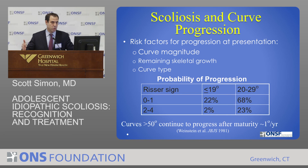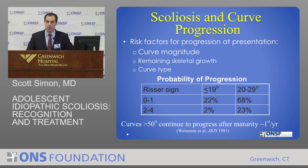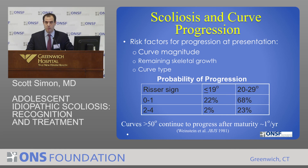On the pelvic x-ray, we look at the Risser sign — a growth plate that marches from lateral to medial across the pelvis, divided into quarters. The more medial the growth plate, the more skeletally mature the patient, until it's fully fused. The more skeletally immature the patient and the bigger the curve, the more likely it will progress. We want the curve to stay under 50 degrees, because beyond that threshold, the curve seems to progress slowly but steadily throughout the patient's life. Curves under 50 degrees tend to be relatively static once skeletal growth is complete.